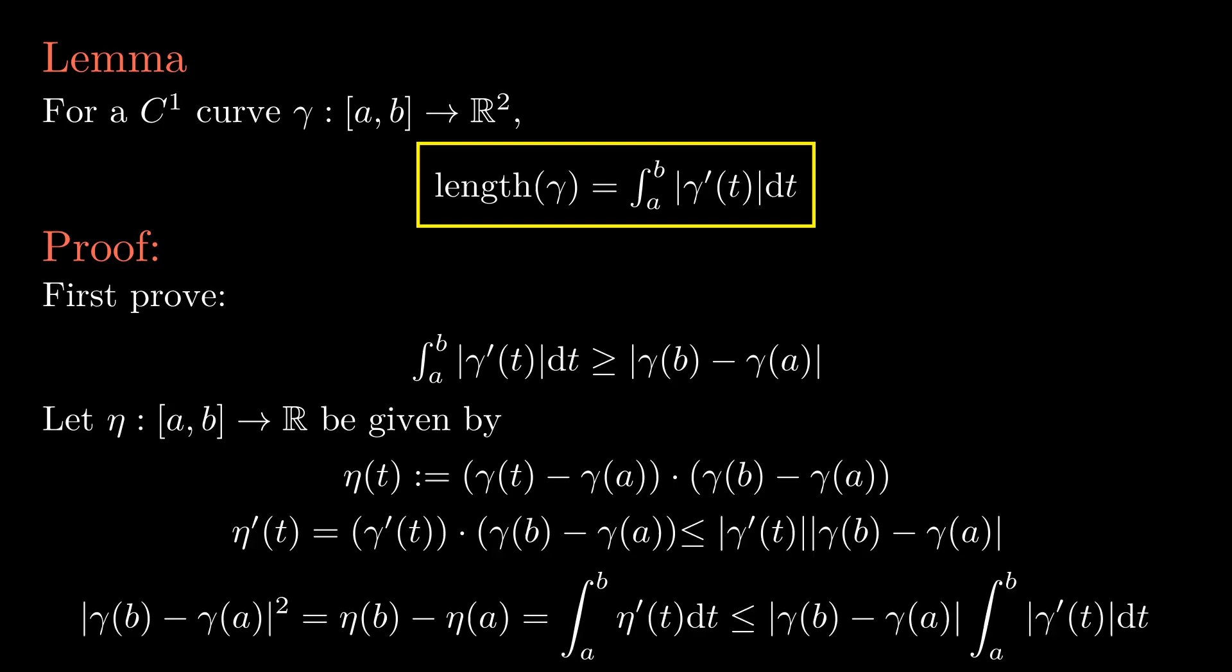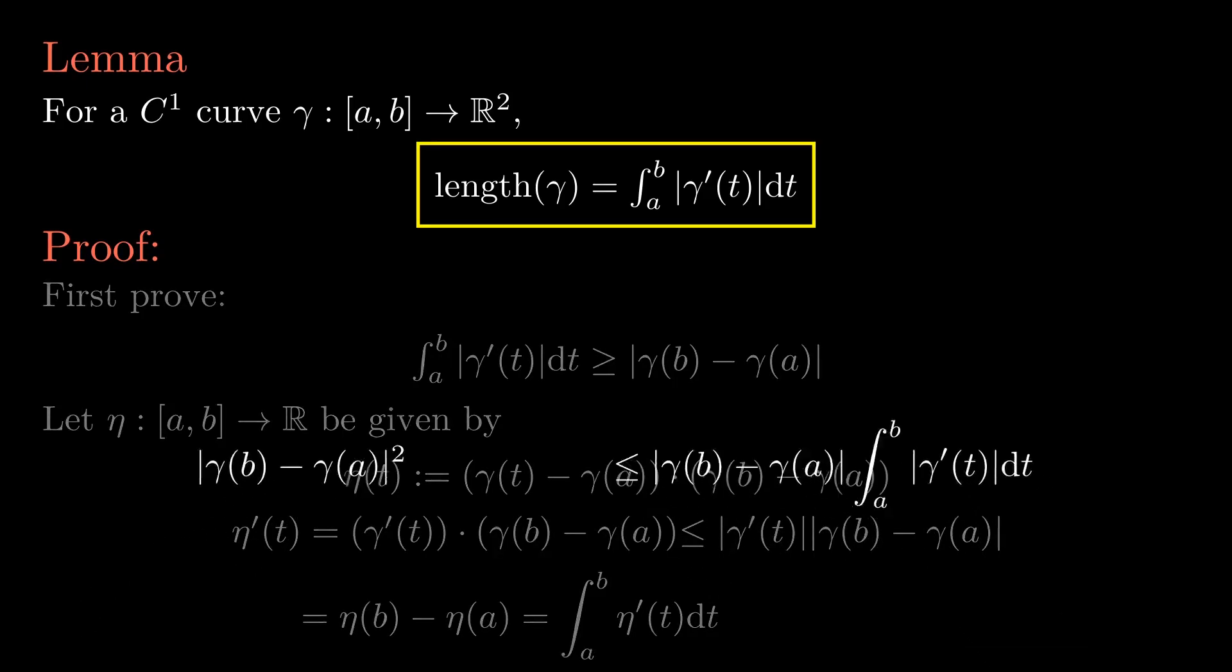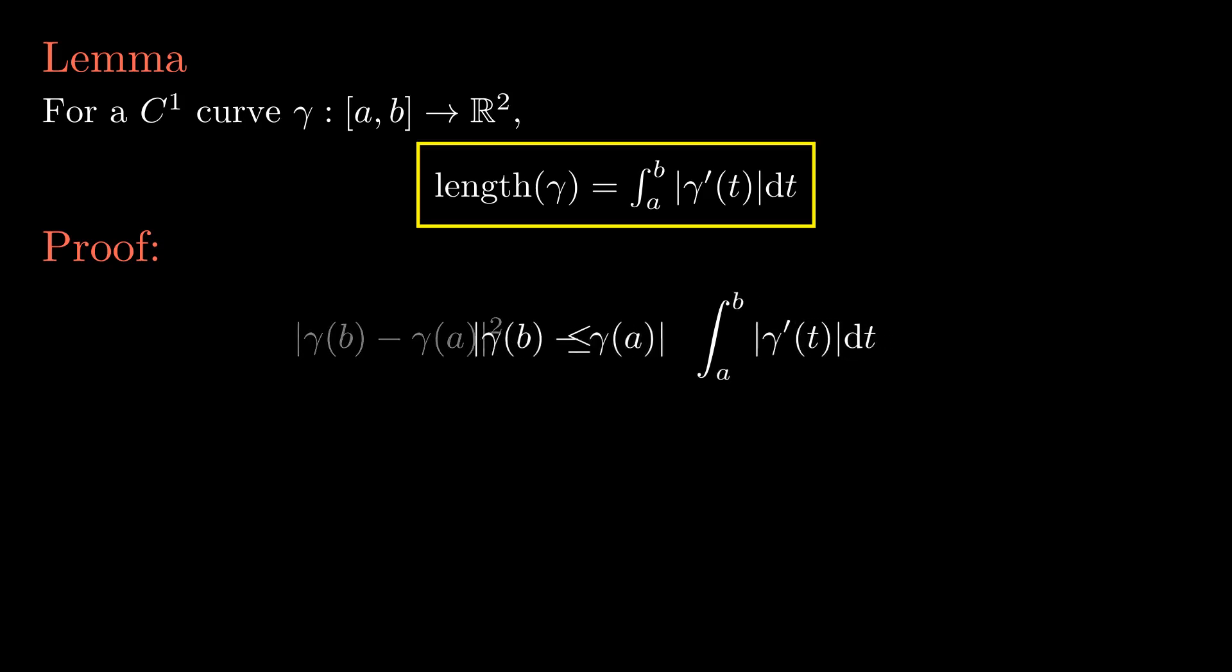On one hand, eta of a is zero, and eta of b is gamma of b minus gamma of a squared. On the other hand, the integral of eta prime is less than or equal to the length of gamma b minus gamma a times the integral of gamma prime. After canceling the length of gamma b minus gamma a, this is exactly what we wanted.